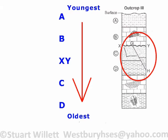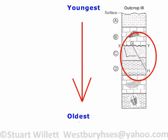Now, what about the fault? The fault G-H could not cut D unless D was already there. Therefore, D has to be older than the fault. It also cuts C, so C and D had to be there before the fault. However, it doesn't cut the unconformity, so the unconformity wasn't there yet when the fault formed. So this gives us our new order.